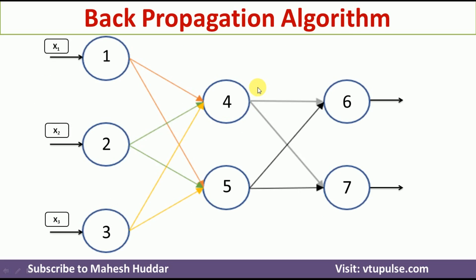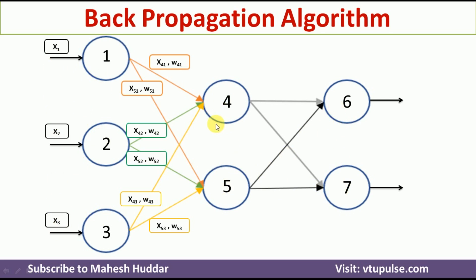For understanding purposes, I have taken ni equal to 3 — that is 3 units in the input layer. n_hidden is equal to 2 — that is 2 hidden layer units — and n_out is equal to 2 — that is 2 output layer units. x1, x2, x3 are the inputs, and units 1, 2, 3, 4, 5, 6, 7 are the units in the network. Next we need to assign the weights as well as the inputs.